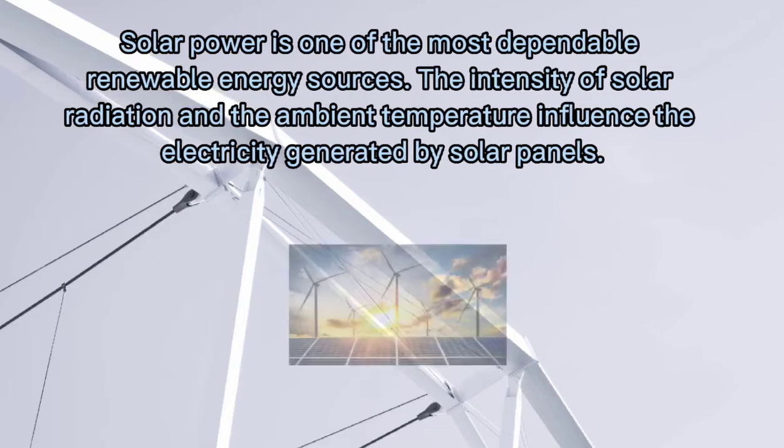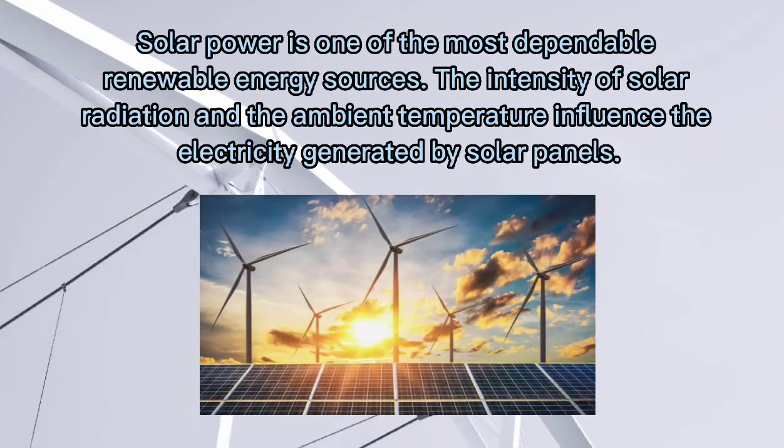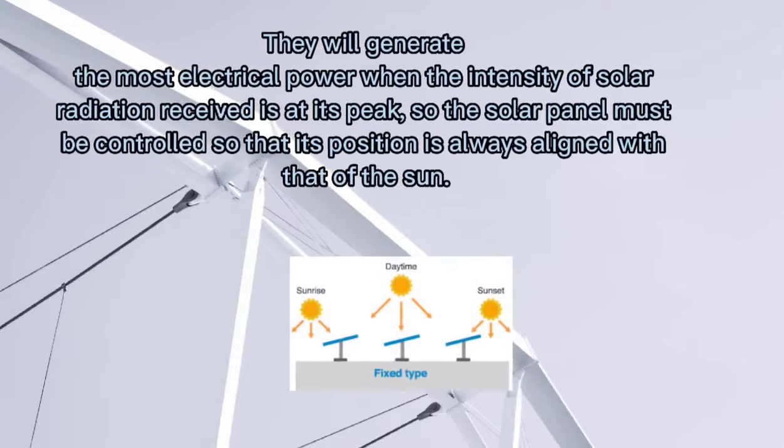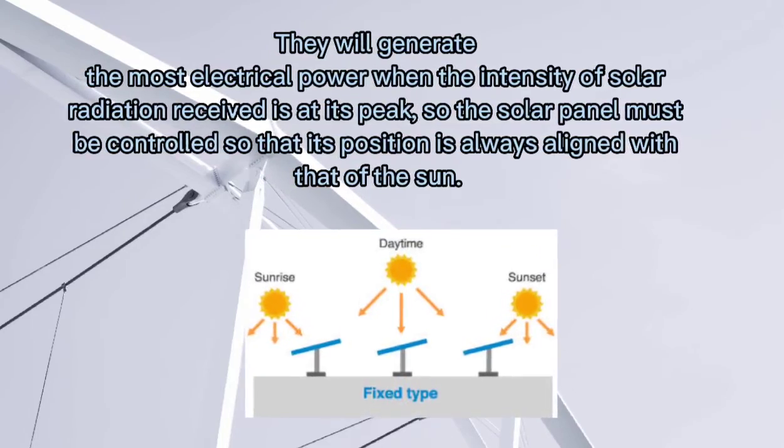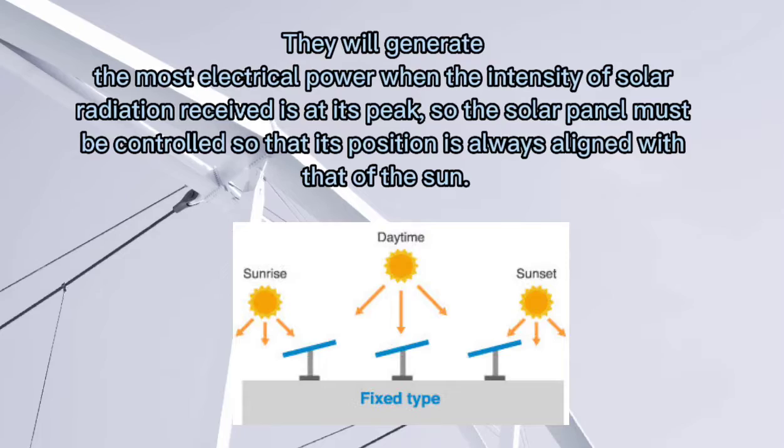We all know that solar power is one of the most dependable renewable energy sources. The intensity of solar radiation and the ambient temperature influence the electricity generated by solar panels. They will generate the most electrical power when the intensity of solar radiation received is at its peak, so the solar panel must be controlled so that its position is always aligned with that of the sun.